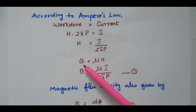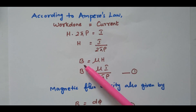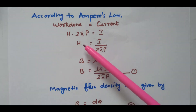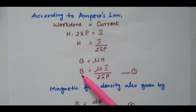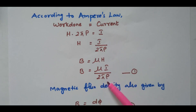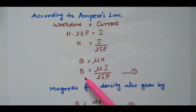From the magnetic field intensity, magnetic flux density B can be calculated as B = μH. So from magnetic field intensity we calculate magnetic flux density: B = μ × H = μI / (2πρ). This is equation number 1. Now we have the expression for B, the magnetic flux density.